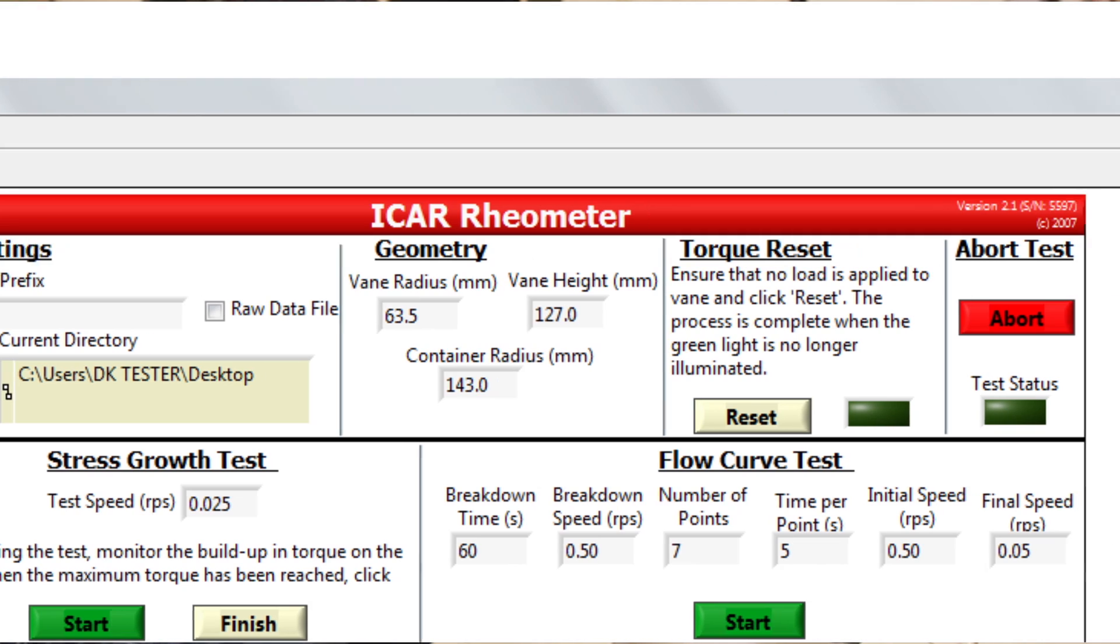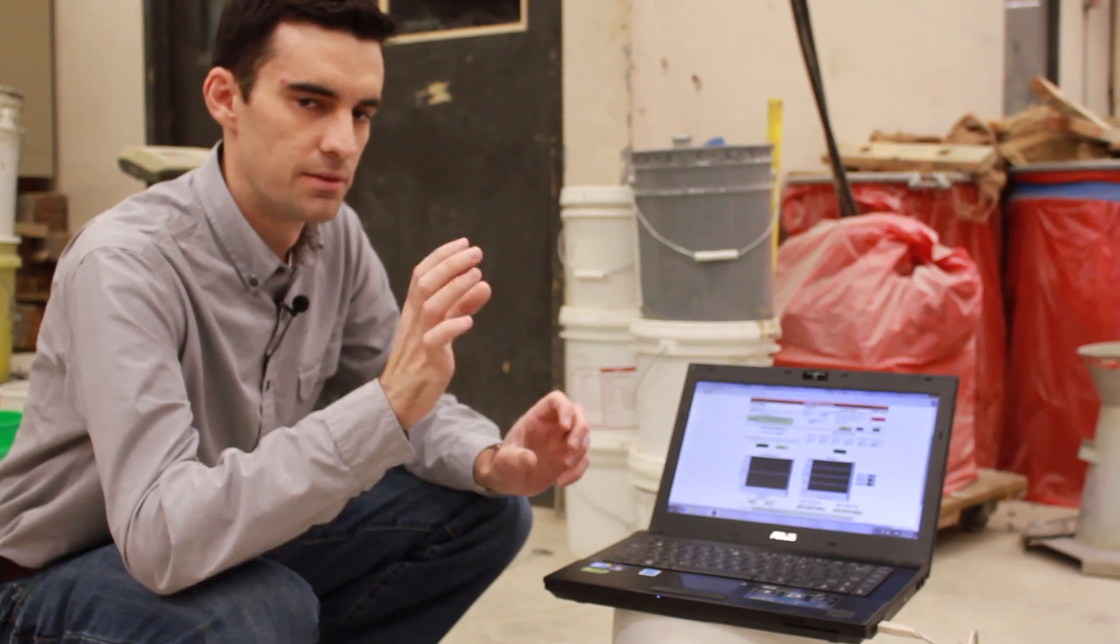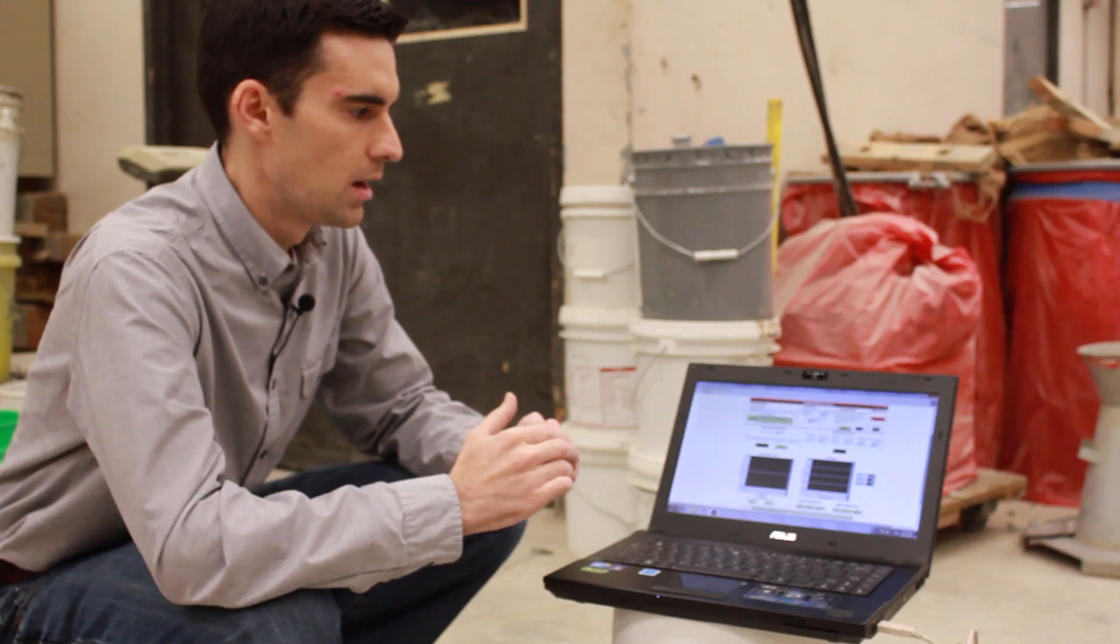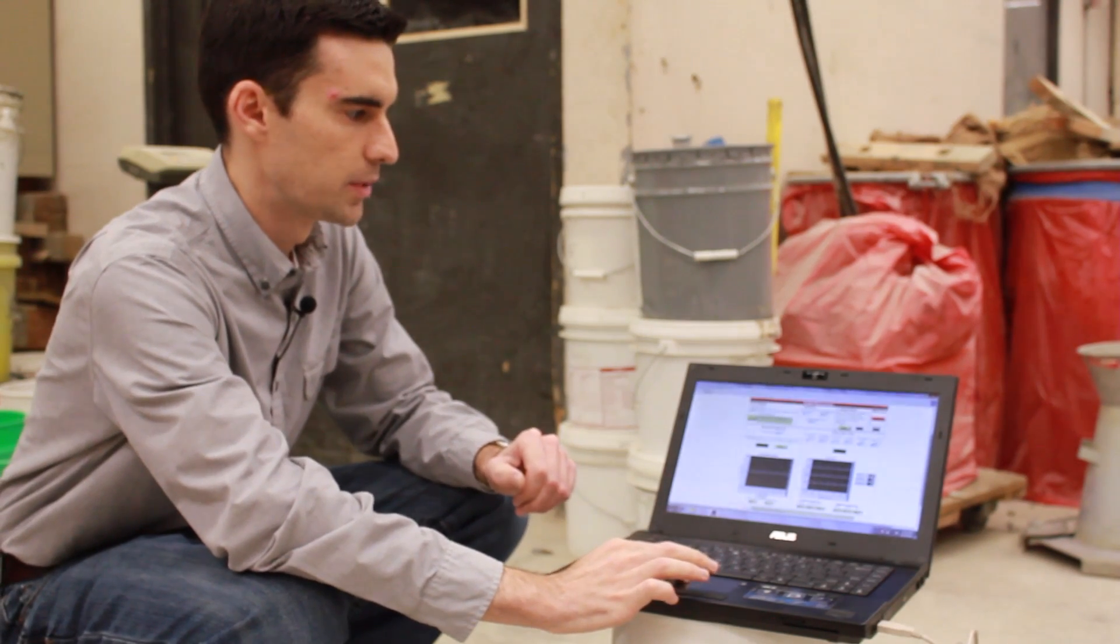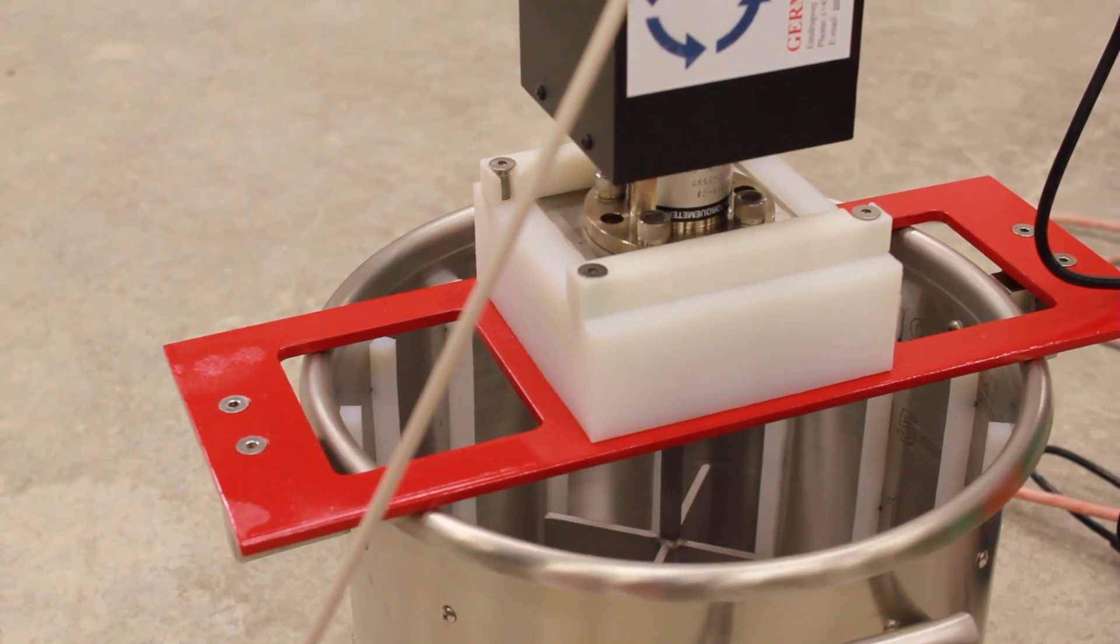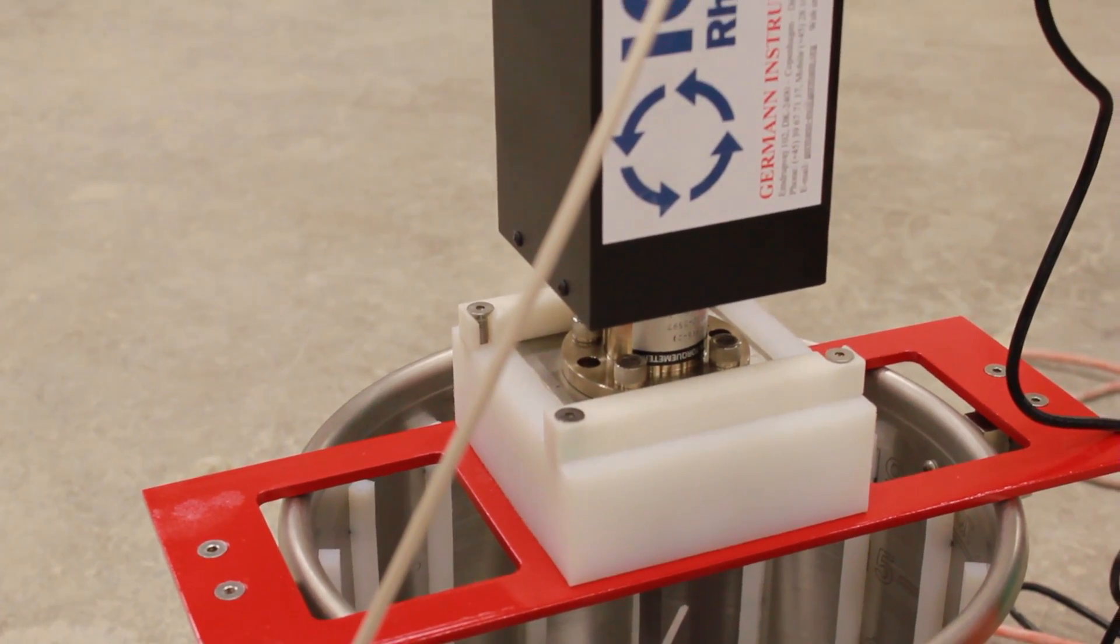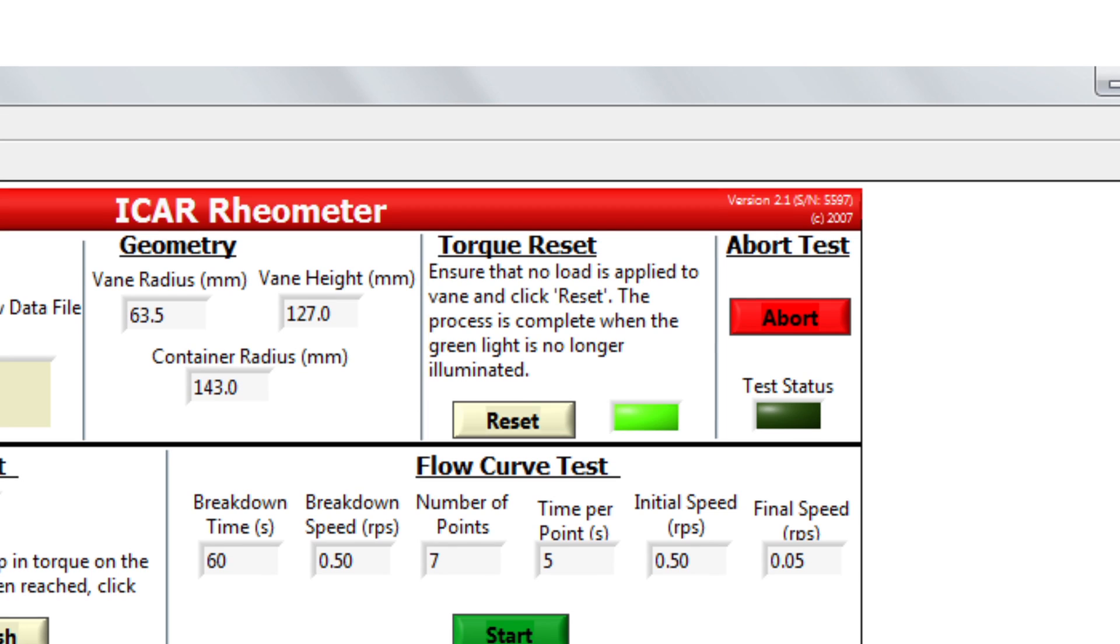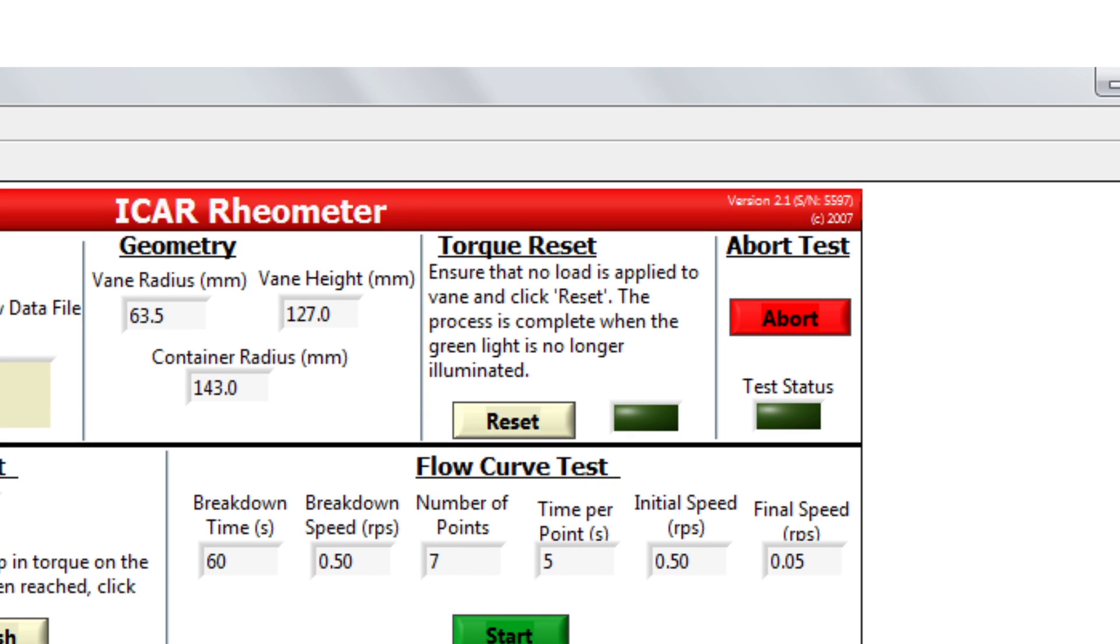The next thing we do is we need to zero out the torque. So that when there's zero torque acting on the vane, the rheometer is actually reading zero torque. We want to do this at the beginning of the day and then between every test. We have our rheometer set up with no material touching the vane. So we're confident that there is zero torque acting on the vane. We then press reset. We watch for that light to illuminate. When the green light turns off, we reset our torque.